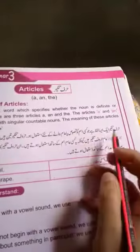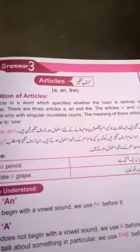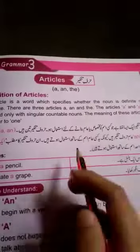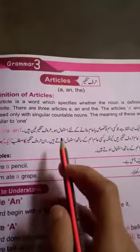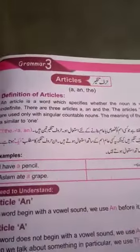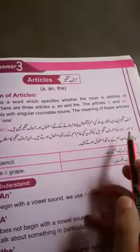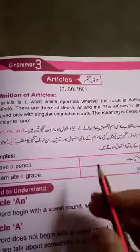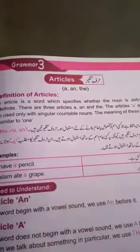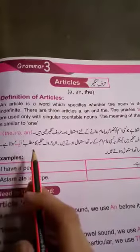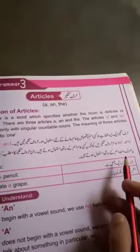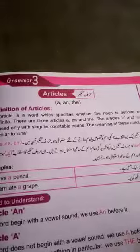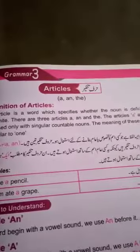A and AN are used with singular countable nouns. AN is used as an extra word before certain nouns. Just as one is used with singular terms, A and AN are used similarly with them.